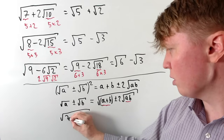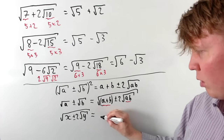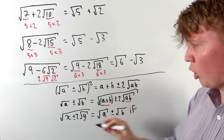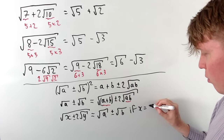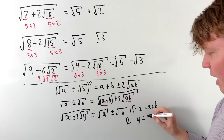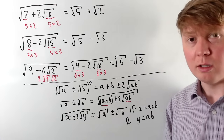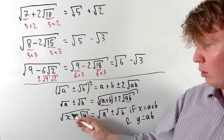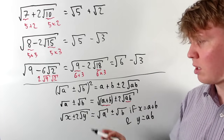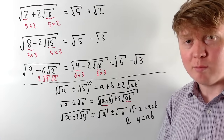So as a little formula: given √(x ± 2√y), we can write this as √a ± √b provided x equals a plus b, and y equals a times b. So if we're given an expression of this form, we try to find two integers whose sum is x and whose product is y, and this allows us to denest.